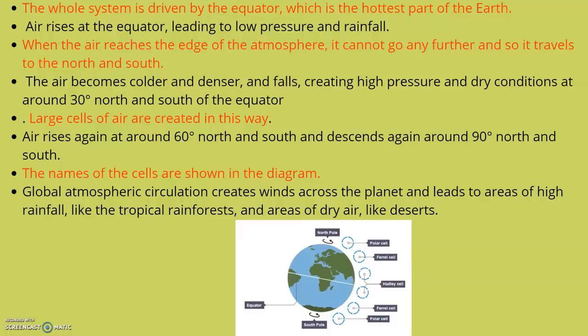Air rises again at around 60 degrees north and south and descends around 90 degrees north and south. The names of these cells are Hadley, Ferrel, and Polar. Global atmospheric circulation creates winds across the planet, leading to areas of high rainfall like tropical rainforests and areas of dry air like deserts.